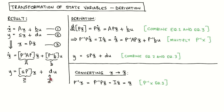To get the second line of the result we again use equation 3 and substitute P·X̄ for X in equation 2. This directly gives the second line of the result.